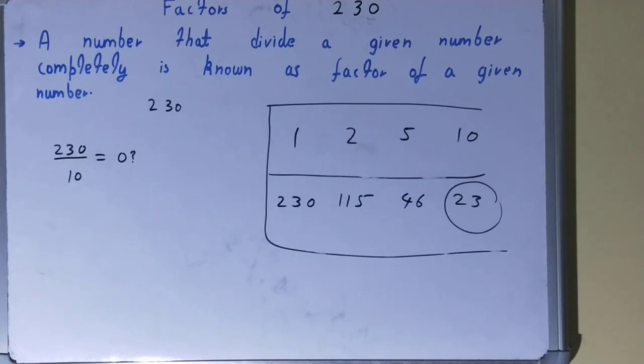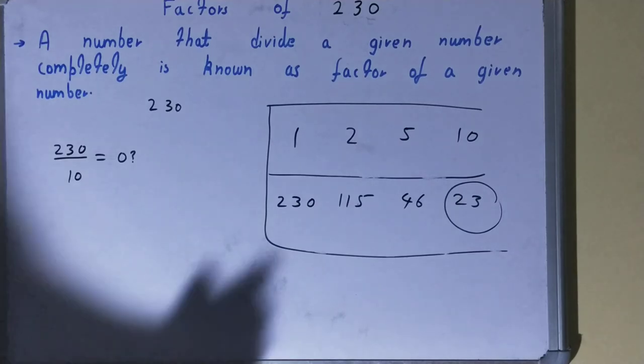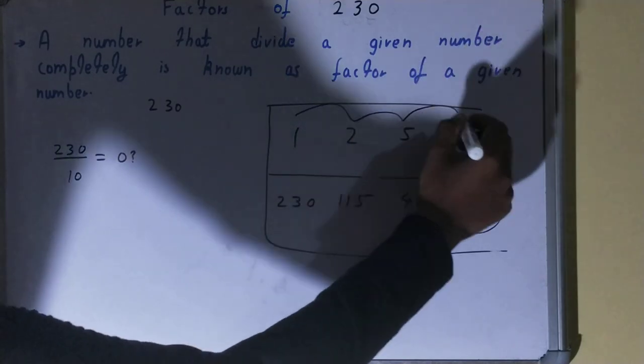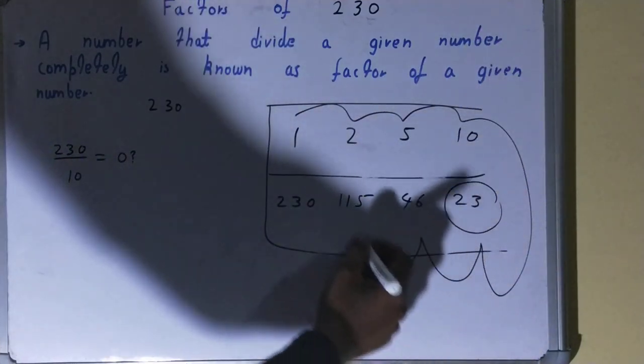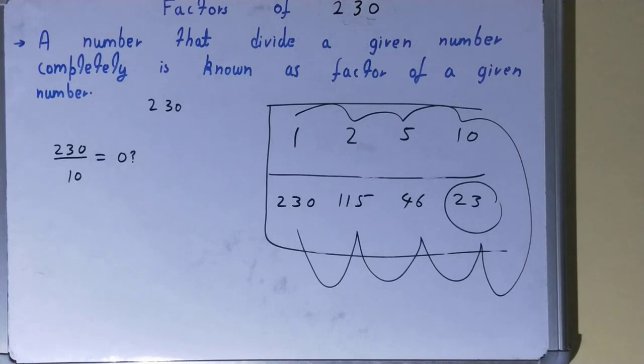And the set of factors for the number 230 will be 1, 2, 5, 10, 23, 46, 115, and 230. So this was all about factors of the number 230. So if you found the video helpful,